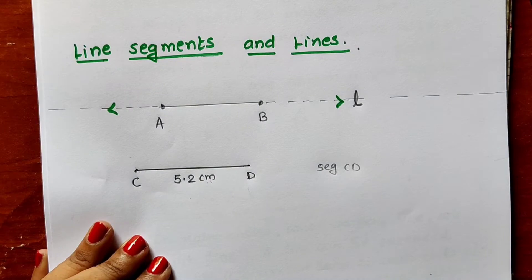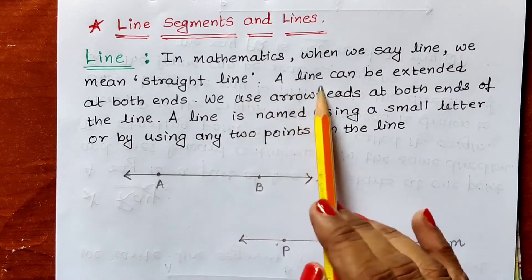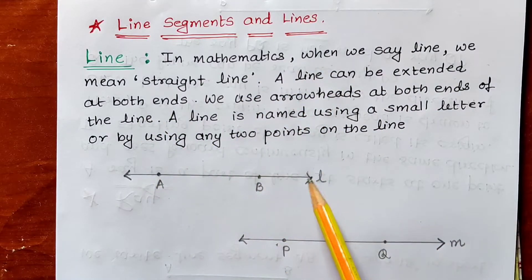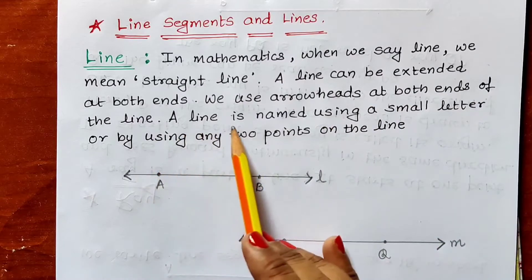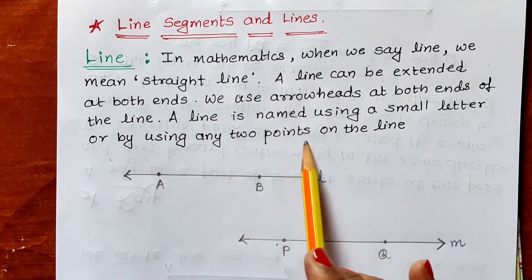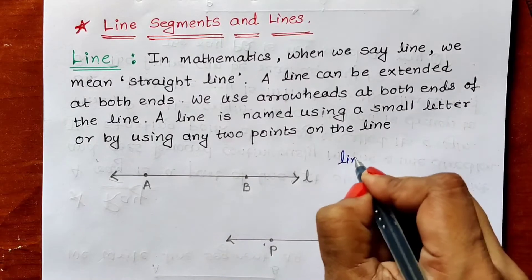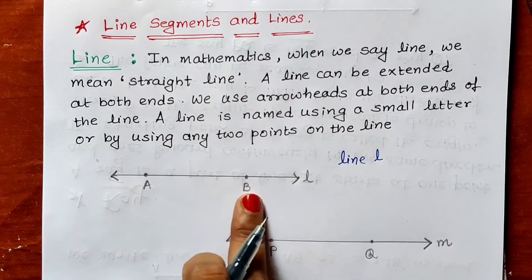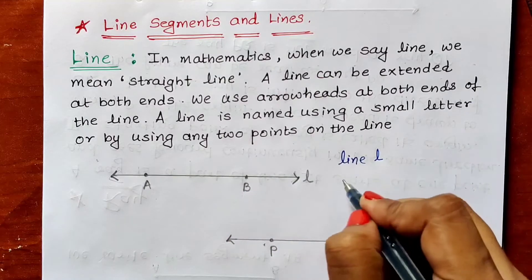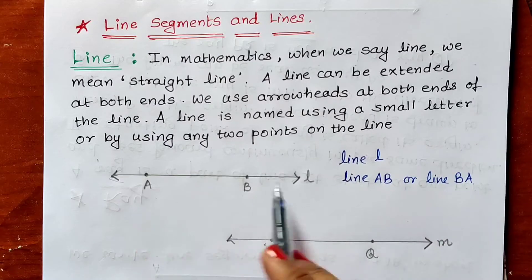Let us see their definitions. First, the definition of line: in mathematics, when we say line, we mean straight line. A line can be extended at both ends — we use arrowheads at both ends of the line. A line is named using a small letter or by using any two points on the line. For example, I can write it as line L, or using two points A and B, I can write the name as line AB or line BA.